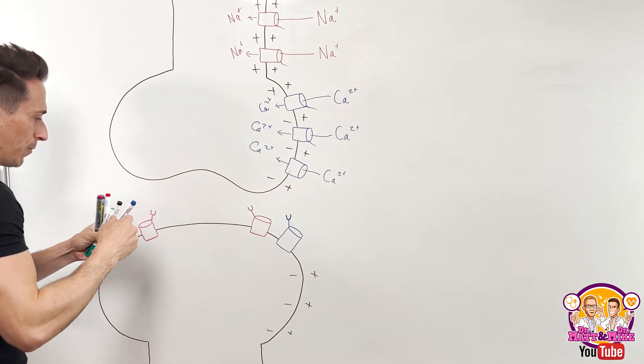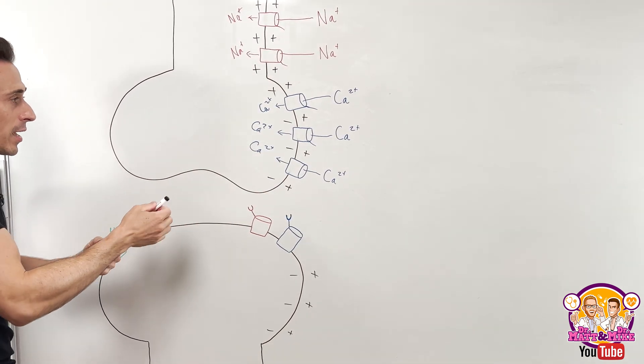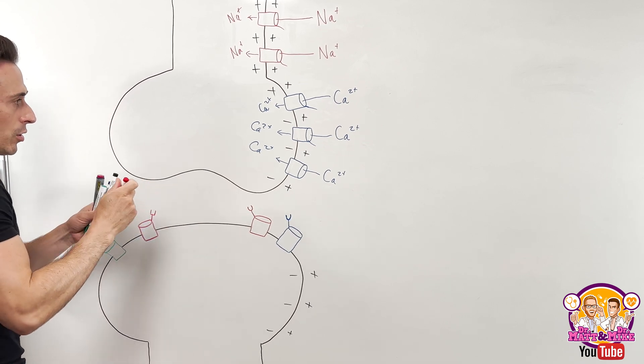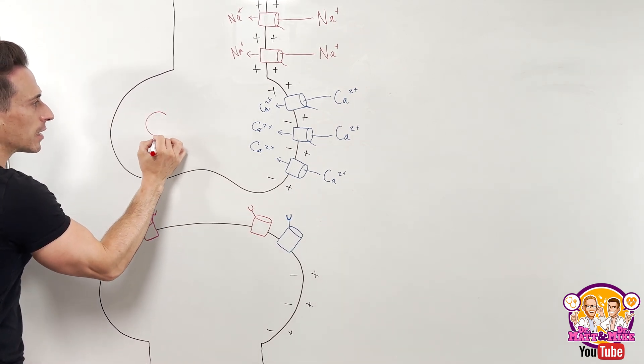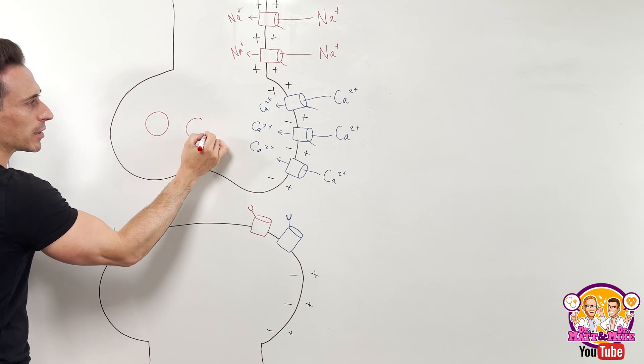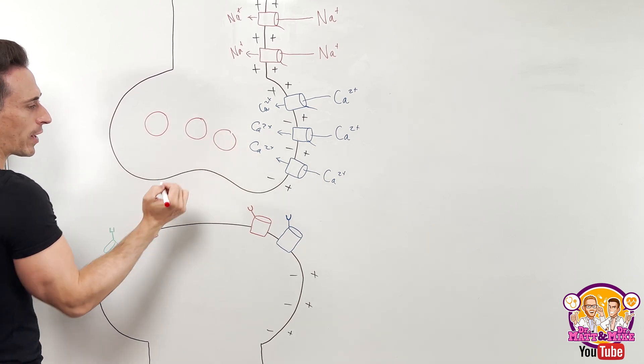Now what does calcium do? Well, importantly, in this scenario, calcium triggers these vesicles, which look like little bubbles that are carrying neurotransmitters.